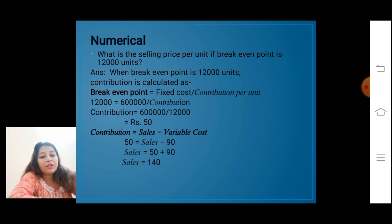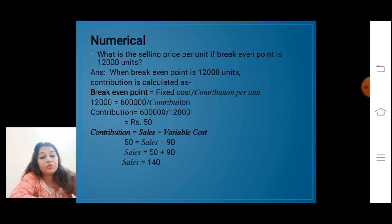Second point: what is the selling price per unit if the break-even point is 12,000 units? Break-even point equals fixed cost upon contribution per unit. So 12,000 equals 6 lakh upon contribution, which gives contribution equals 6 lakh upon 12,000, that is rupees 50. Now, contribution equals sales minus variable cost: 50 equals sales minus 90, so sales equals rupees 140 per unit.